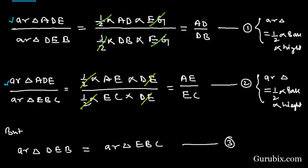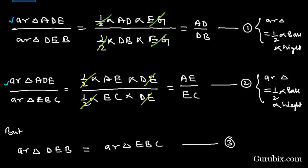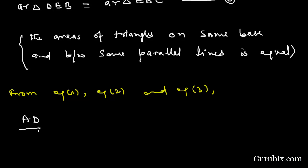From equations 1, 2, and 3, we observe that the area of triangle ADE appears in both Equation 1 and Equation 2, and from Equation 3 the denominators are equal. Therefore the two ratios are equal, and we conclude: AD/DB = AE/EC. This is what we wanted to prove. This completes the proof of the theorem. Thank you.